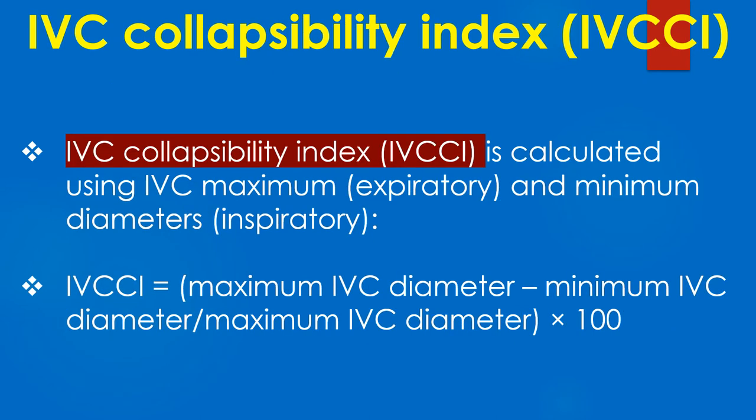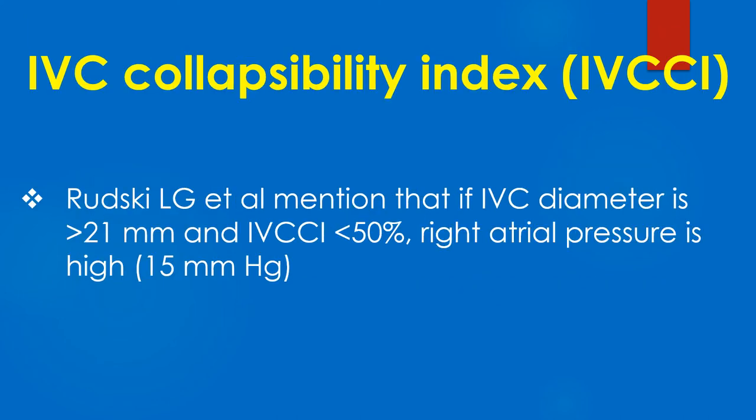IVC collapsibility index is calculated using IVC maximum and minimum diameters: maximum IVC diameter minus minimum IVC diameter, divided by maximum IVC diameter, multiplied by 100. Rudsky and associates mention that if IVC diameter is more than 21 mm and IVC collapsibility is less than 50%, right atrial pressure is high.